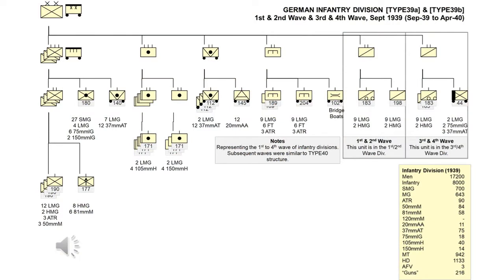The German Infantry Divisions were raised in waves, with the first four waves representing the bulk of the divisions involved in the invasion of Poland. Subsequent waves were closer to the 1940 structure. The main difference between the first and second wave versus the third and fourth waves was the reconnaissance battalion, with the later waves having a much more powerful one — possibly related to a lack of horses or increased production of bicycles.